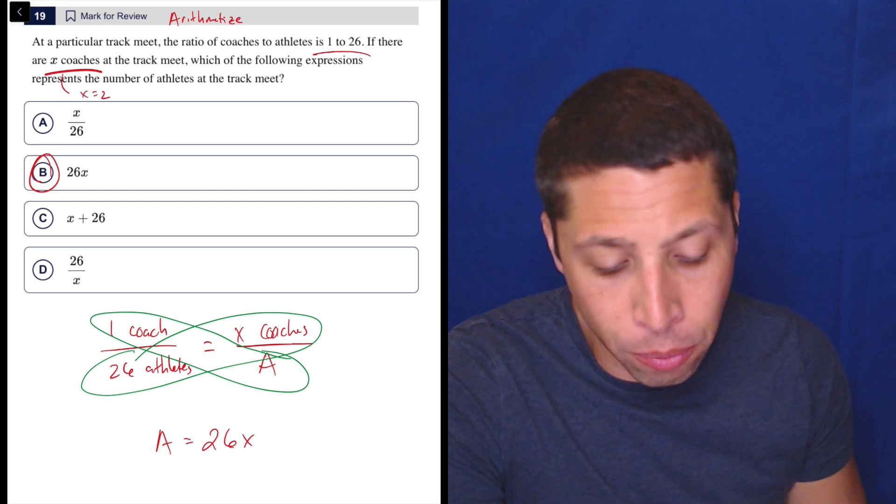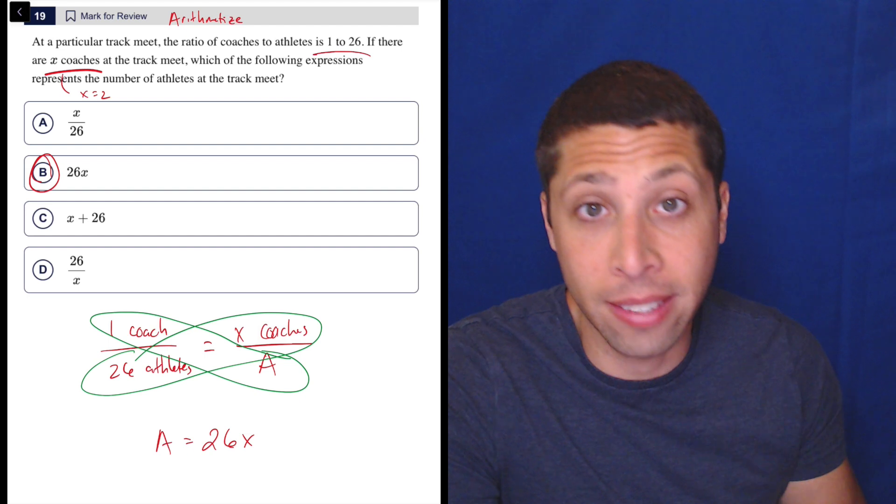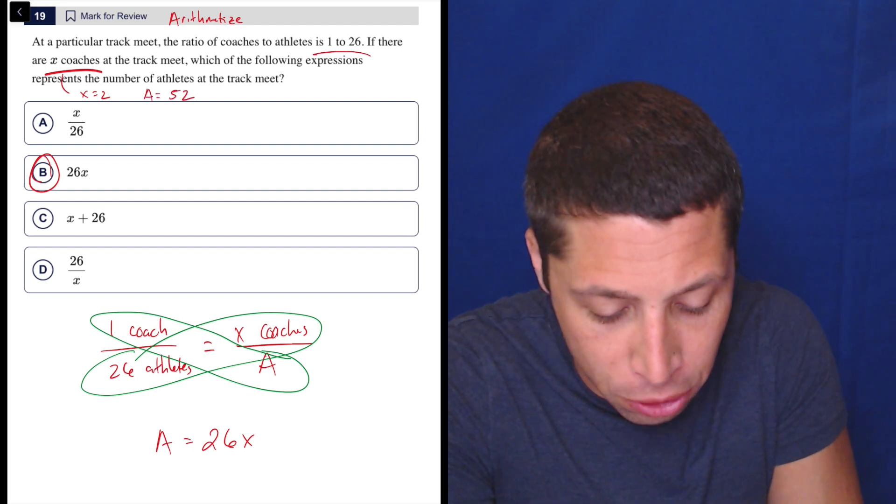Okay. Well then the ratio, you may be able to just do this in your head. There would be 26 athletes per coach. So two times 26. So the number of athletes would be 52.